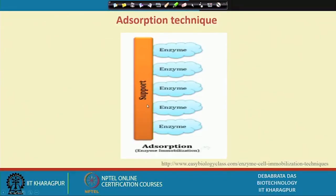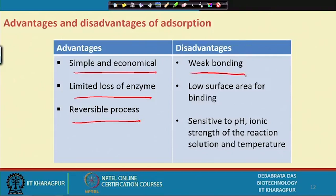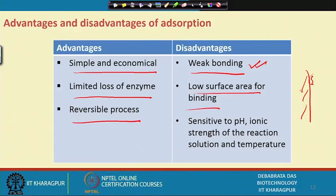The enzyme simply adheres on the surface of the solid matrix. The advantages of adsorption are that it is very simple, economical, involves limited loss of enzymes, and is a reversible process — meaning you can dislodge the enzyme and re-immobilize it on the solid surface. The disadvantages are weak bonding, low surface area for binding, and sensitivity to pH, ionic strength, and temperature of the reaction solution.